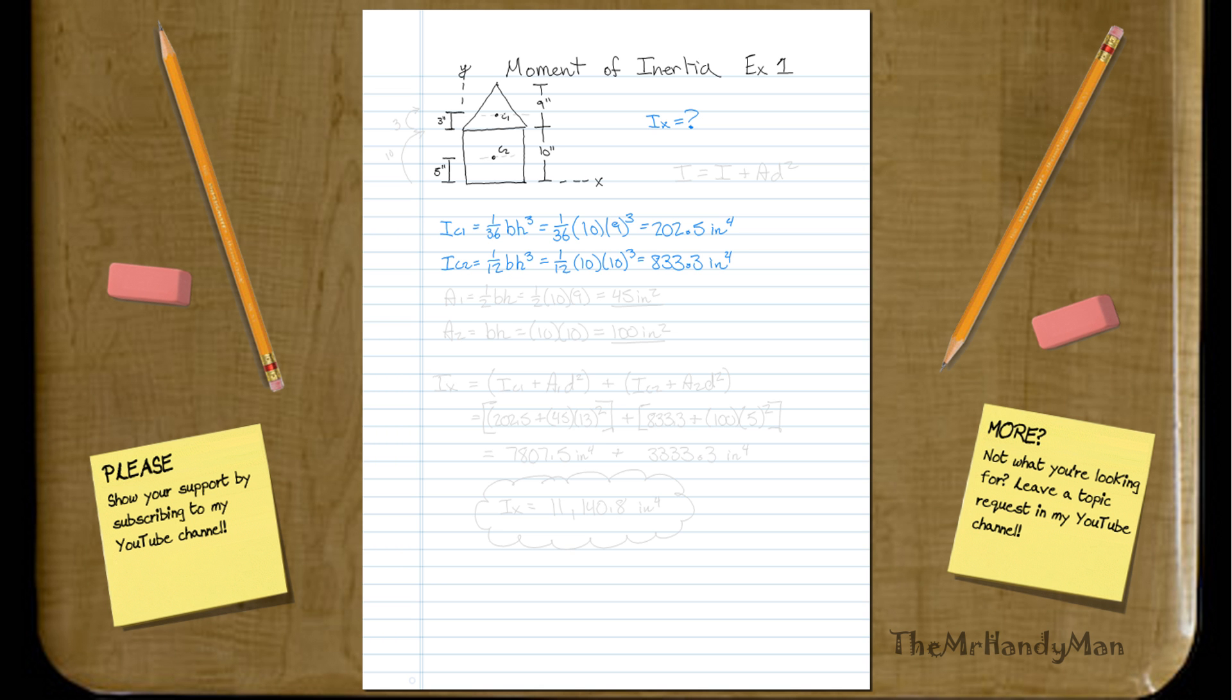Now, we know that the parallel axis theorem is going to be I equals I plus AD squared. So we need the area of each of these shapes if we're going to bring it back down to the x-axis, because right now all we have is the inertia about x1 and x2, or c1 and c2.